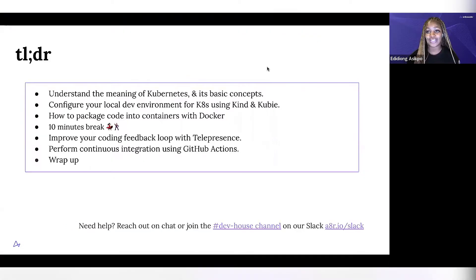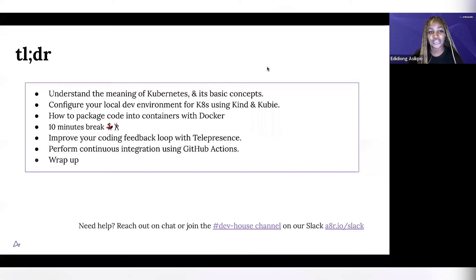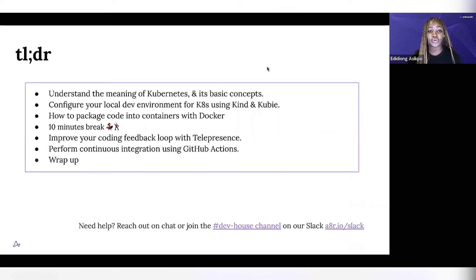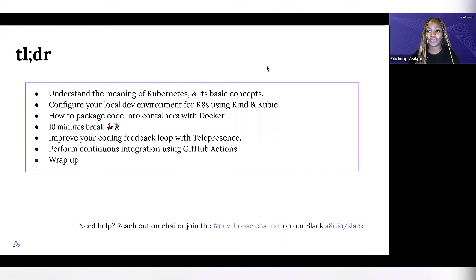Here's what we're going to cover today. At the end of this workshop, you'll be able to understand the meaning of Kubernetes and its basic concepts. You'll learn how to configure your local development environment for Kubernetes using Kind and Kubie, how to package code into containers with Docker, improve your coding feedback loop with Telepresence, and learn how to perform continuous integration with GitHub Actions. If you have any questions during this workshop, please drop it in the chat, and either Daniel or I would be happy to respond to you as soon as possible.